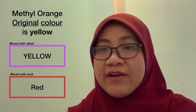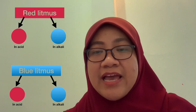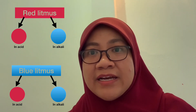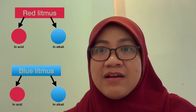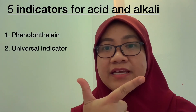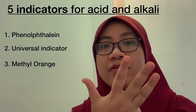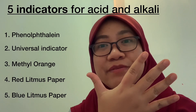The next two are very common: the blue litmus paper and the red litmus paper. Red litmus paper stays red in acid but changes to blue in alkaline. Blue litmus changes to red when immersed in acid but stays blue in alkaline. Let's recap — the five indicators we've learned are: number one, phenolphthalein; number two, universal indicator; number three, methyl orange; number four, red litmus; and number five, blue litmus paper. Remember these five and their color changes.